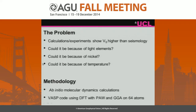The problem is that both calculations and experiments show a shear wave velocity which is much higher than that observed in seismology. As mineral physicists, we try to ask whether this difference could be due to light elements, or nickel which is present, or whether it could be because of temperature.